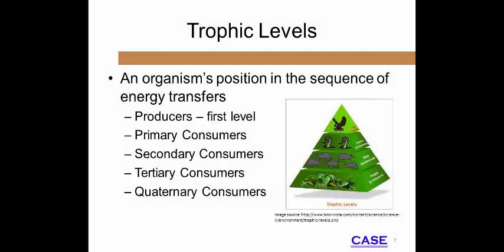Producers consist of plants and other organisms that capture sunlight and through photosynthesis produce energy. Consumers acquire energy through the consumption of other organisms. Herbivores eat only plant matter, while carnivores consume herbivores and/or other carnivores. Consumers are classified according to their role in the food chain.